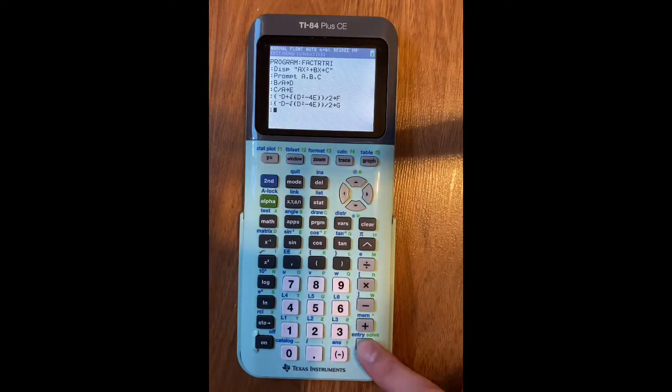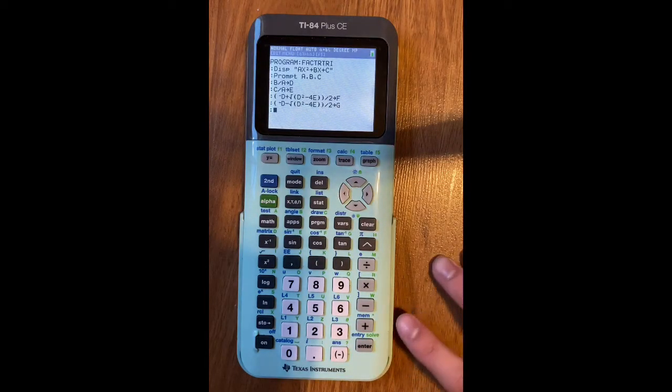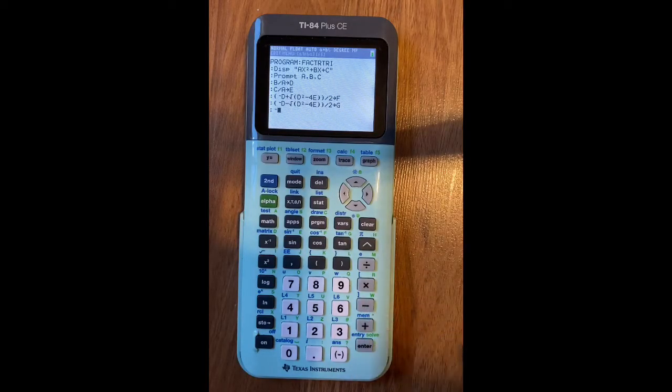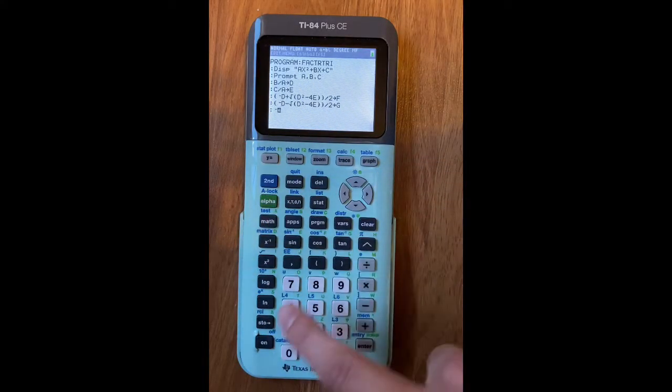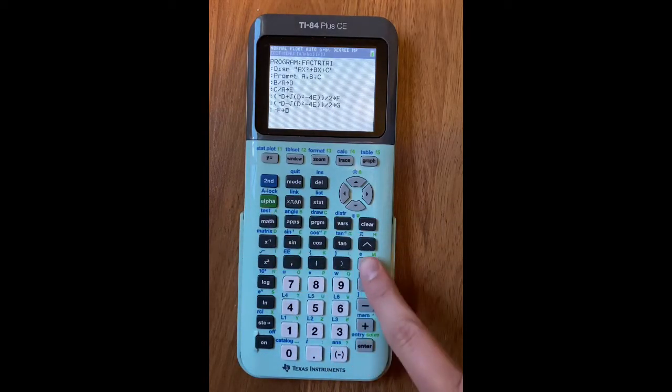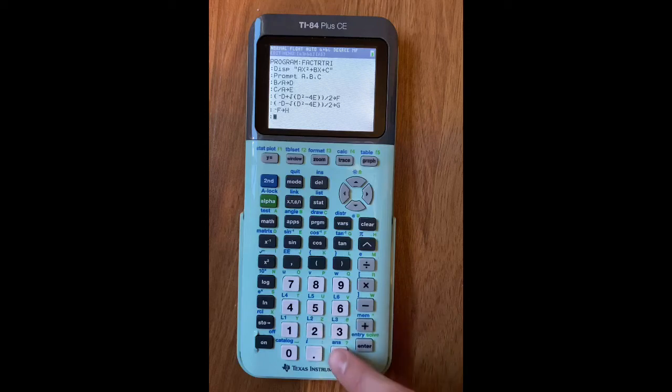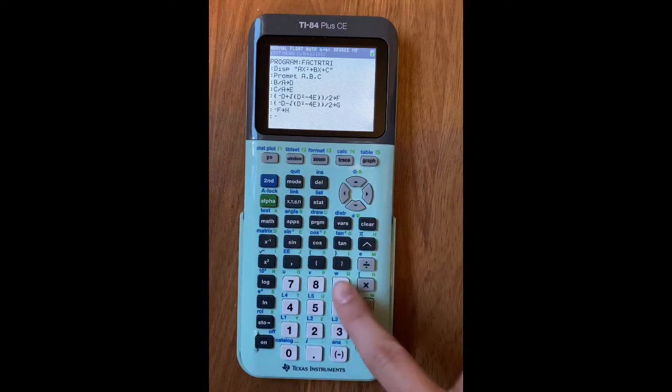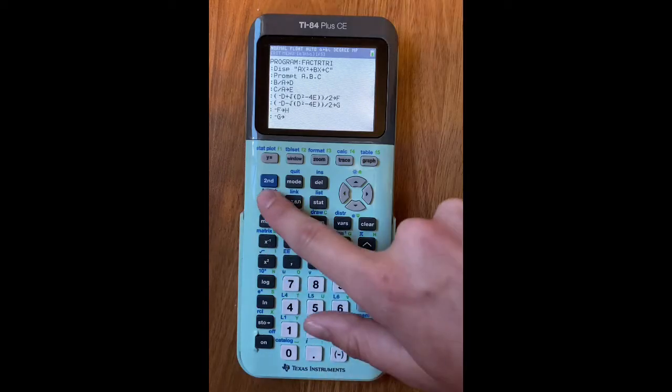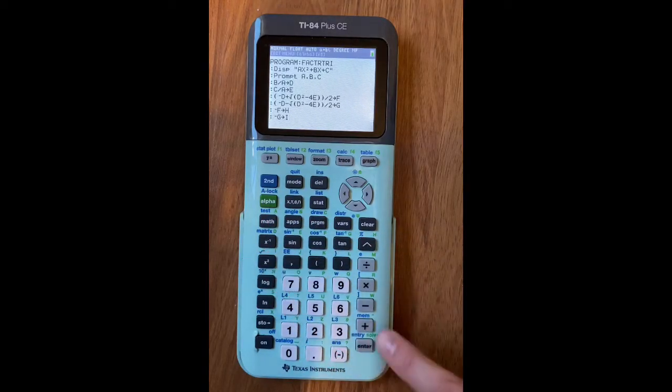Then you're going to press enter. Then you're going to do your negative sign, not the minus sign. Negative F stores as H. Press enter. Negative G stores as I. Press enter.